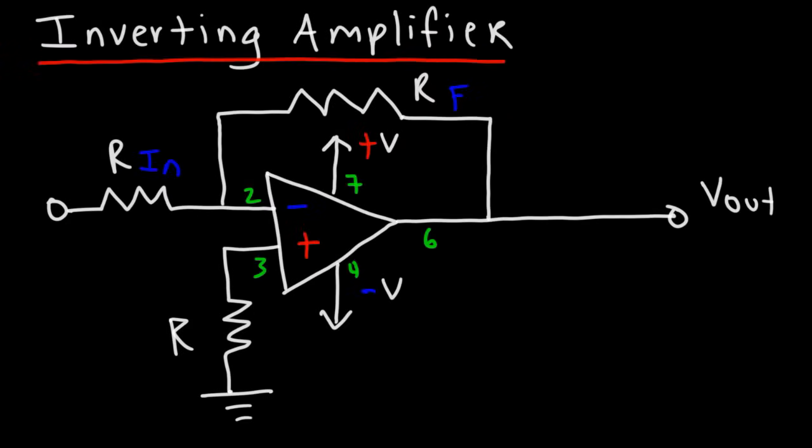So here is a basic circuit diagram of an inverted amplifier. The signal is applied to the inverted input which is represented by pin 2, and so the output will have the inverted signal.